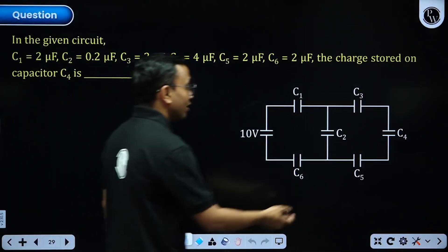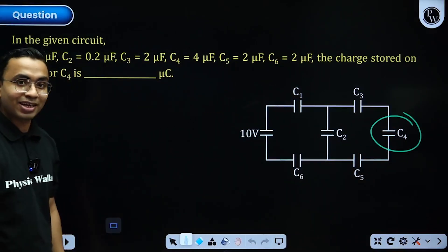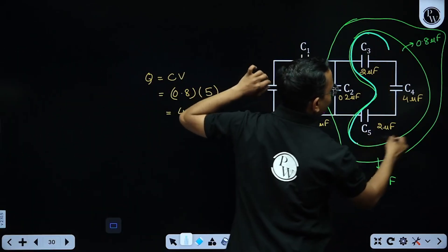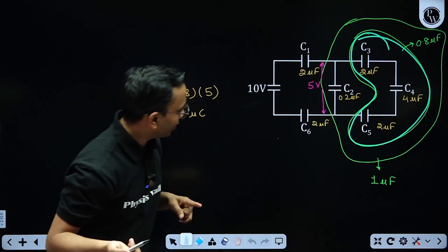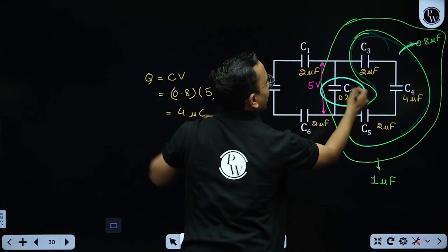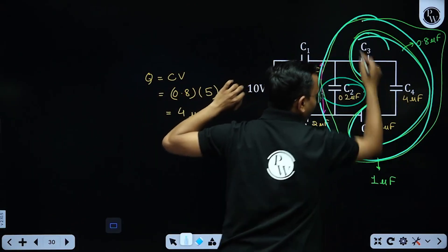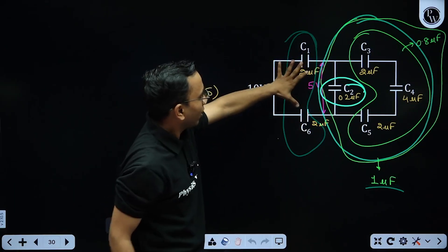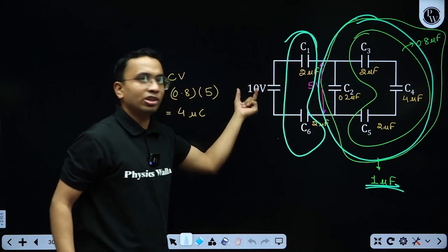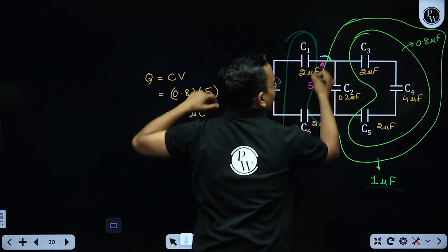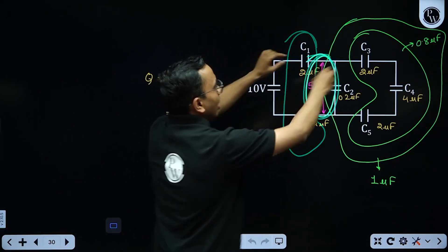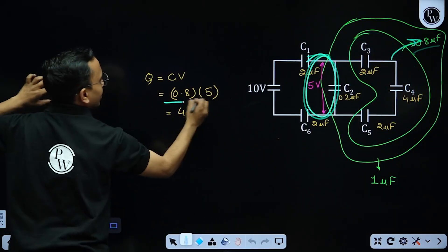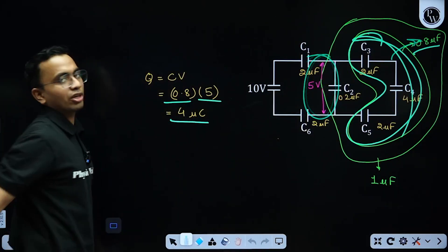Next question: find the charge on capacitor C4. Three capacitors in series have an equivalent of 0.8 µF, which in parallel with 0.2 µF gives 1 µF. This 1 µF is in series with two 2 µF capacitors (equivalent 1 µF), so with 10 V total, the voltage across the parallel combination is 5 V. The charge on the series group is 0.8 × 5 = 4 µC. The answer is 4.